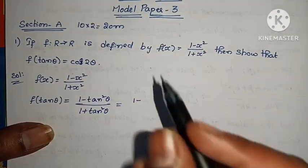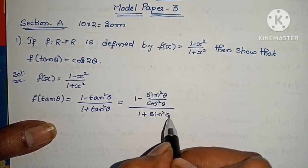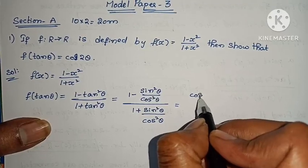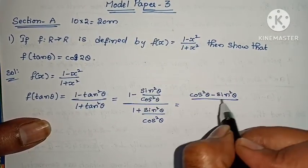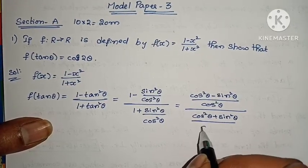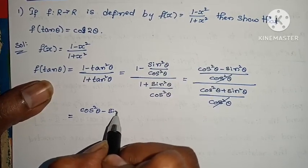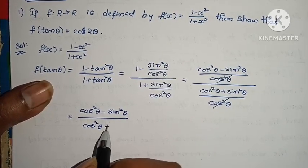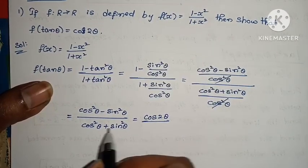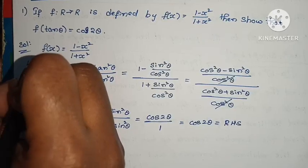Substituting tan θ = sin θ/cos θ: we get (1 - sin²θ/cos²θ) divided by (1 + sin²θ/cos²θ). Simplifying, that equals (cos²θ - sin²θ) divided by (cos²θ + sin²θ). Applying the formula: cos²θ - sin²θ = cos 2θ, and sin²θ + cos²θ = 1. Therefore, that equals cos 2θ = RHS. LHS equals RHS.